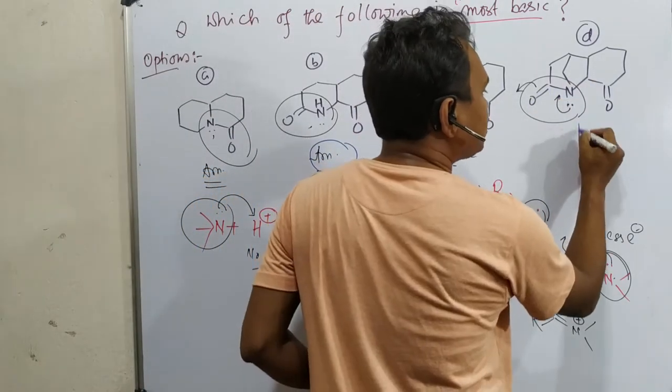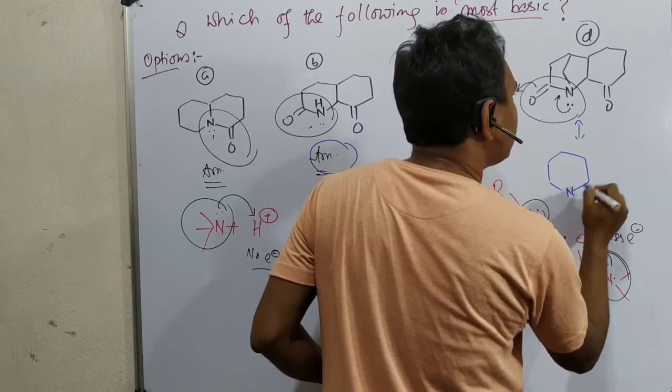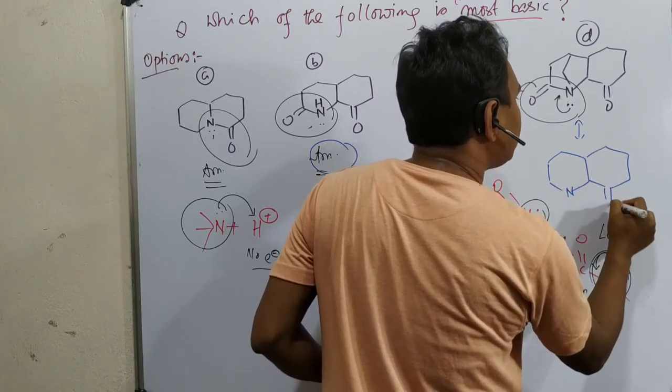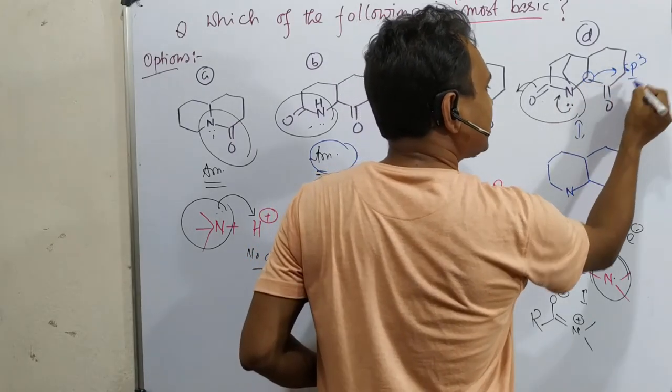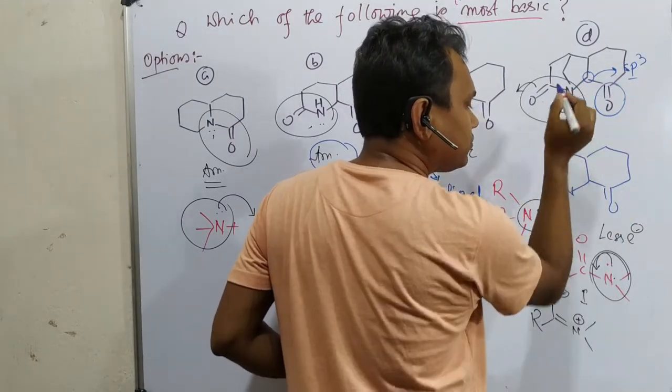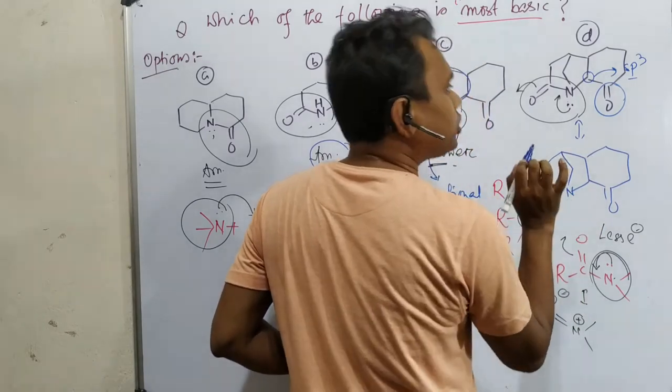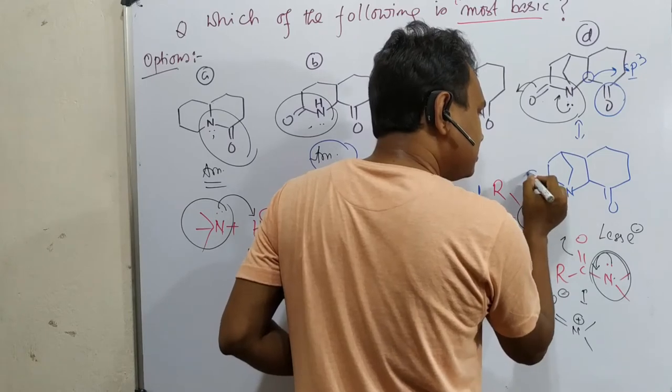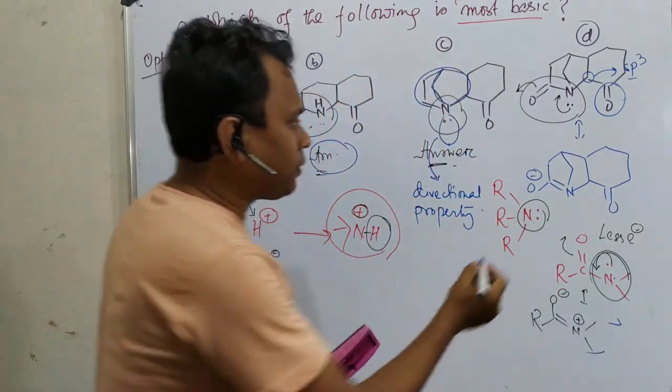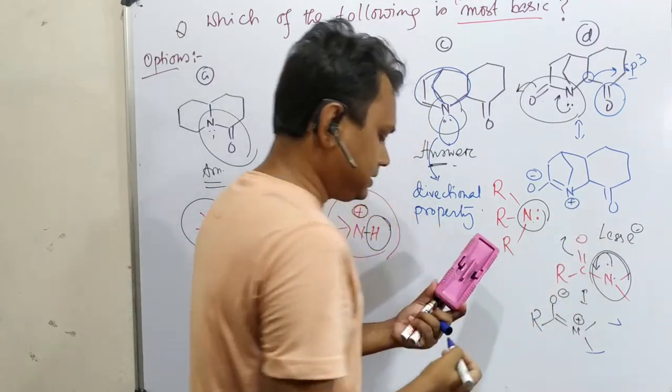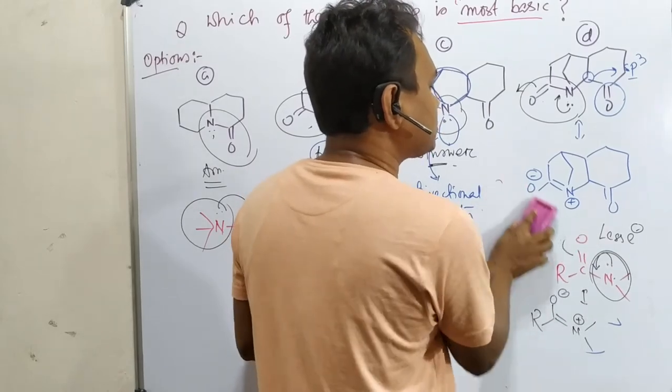Now if this conjugation happens, what is the final product look like? Conjugation will be with this because this is adjacent. But here, one sp3 carbon. So don't get confused, it will not be in conjugation with the lone pair of nitrogen. Now if the conjugation happens, this is according to our distinct. Now question: is it possible? So actually the answer is no. This is not possible.